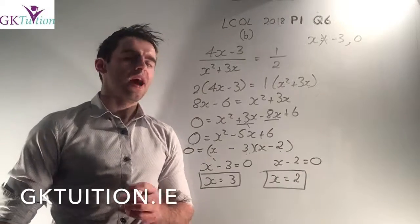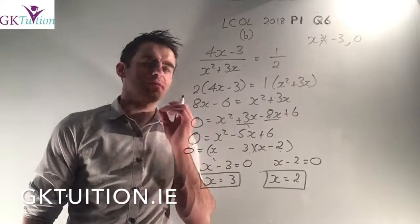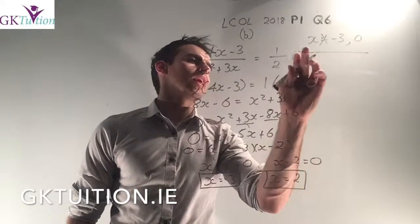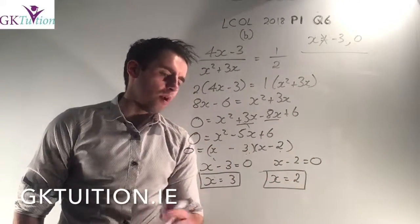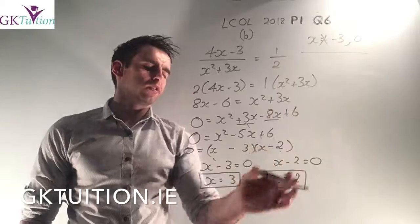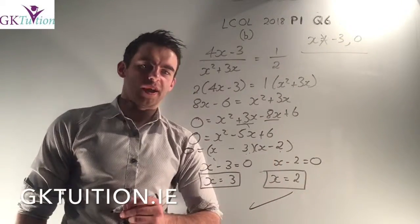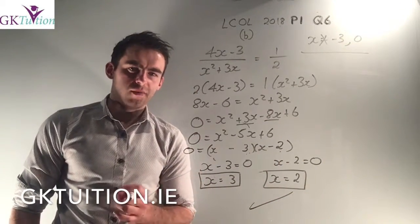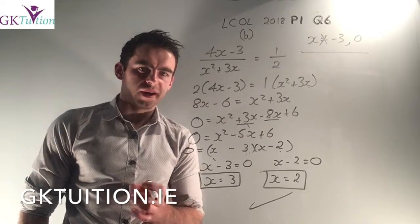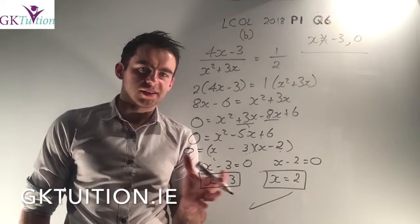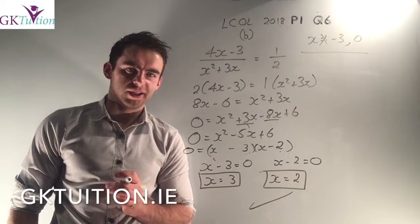And then just always get into the habit of double checking. They told you that x can't be equal to -3 and that x can't be equal to 0. It's not a problem. Neither of these are -3 or 0, so they must be my two answers. So I hope that video makes sense. If there's anything you're unsure of there or you want me to clarify it, send me an email or ask me in class and I'll try and explain it a little bit differently. Thank you.